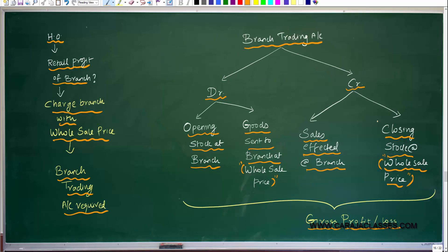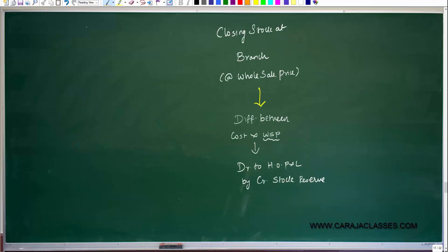One important point to understand here is that the closing stock is at wholesale price. We have to find out what is the difference between the cost and wholesale price, and this difference should be debited to the HO P&L account by crediting stock reserve — that is, in the HO profit and loss account on the debit side we write stock reserve. This segregation is a must to know what is the actual performance of the branch.